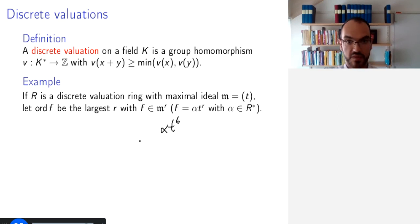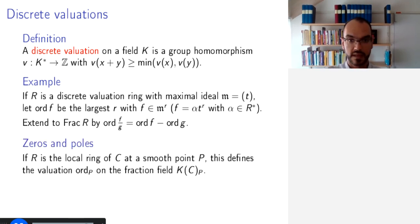And so this is the way to define it on the ring R. Then we extend it to the field of fractions by saying that the order of F divided by G is the order of F minus the order of G. And if R is the local ring of our irreducible projective curve C at a smooth point P, then we get the valuation ord_P on the fraction field K(C).